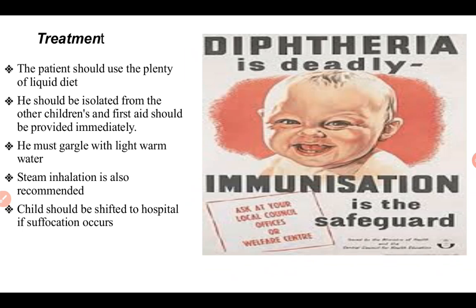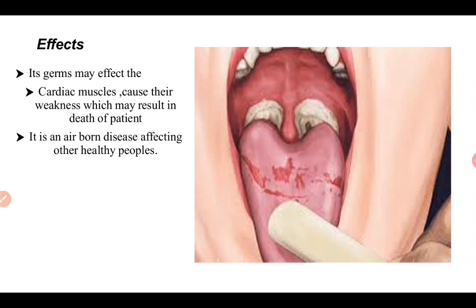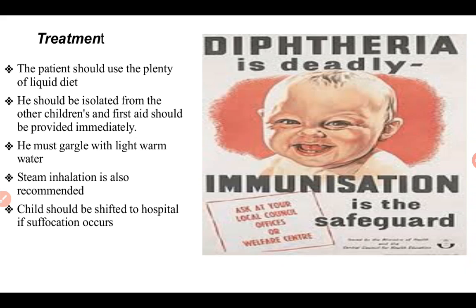For treatment, the patient should drink plenty of liquid water so that the germs can be excreted out of the body. The patient should be isolated from other healthy children and first aid should be provided immediately. The patient must gargle with light warm salt water to normalize the glands and disinfect internal body parts. Steam inhalation is also recommended as it benefits the neck region and glands. If suffocation occurs, the child should be shifted to hospital.